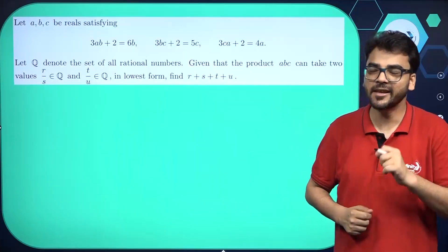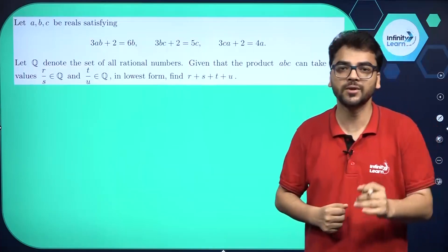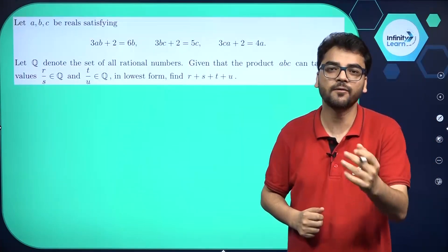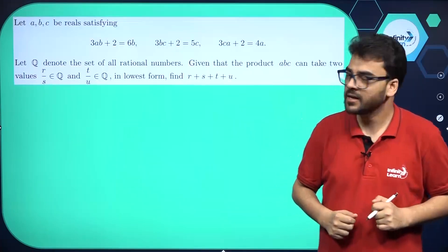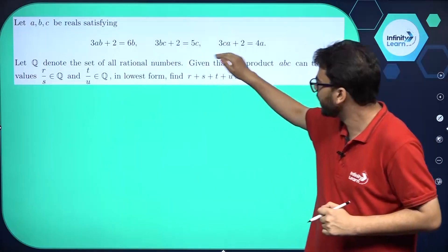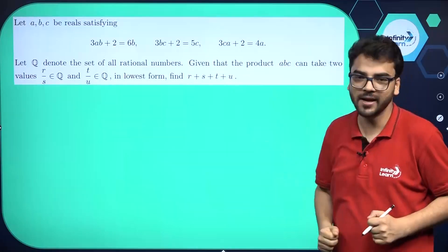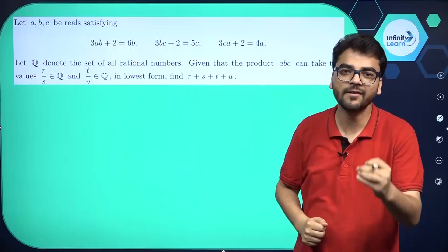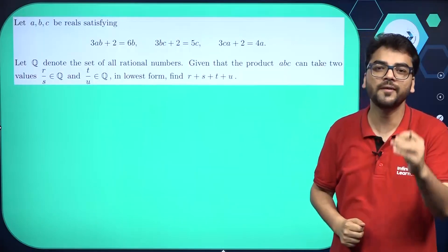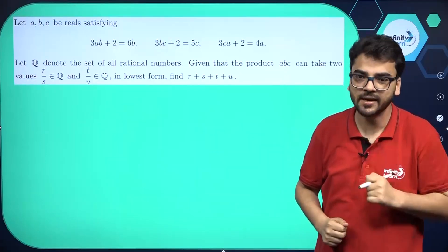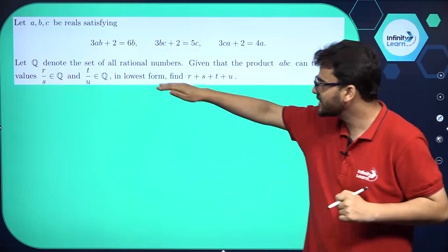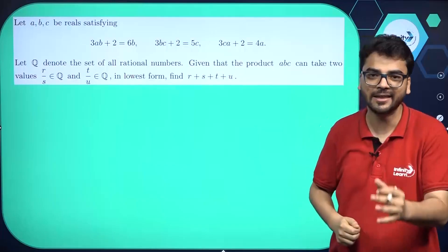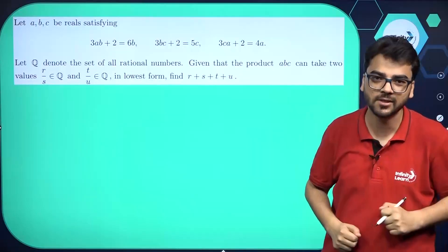There is more than one approach to do this question; I am explaining one of them. We have three equations in A, B and C and we want to find the values of A, B, C. It is given that two possible values of A, B, C exist according to this question.